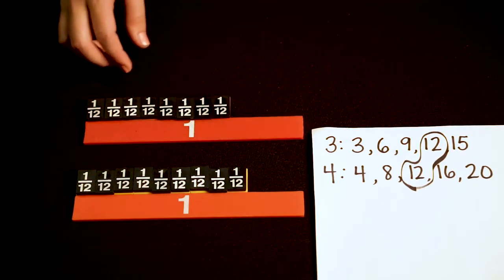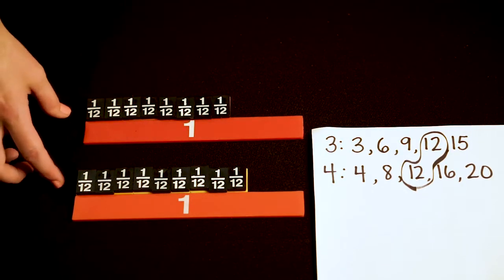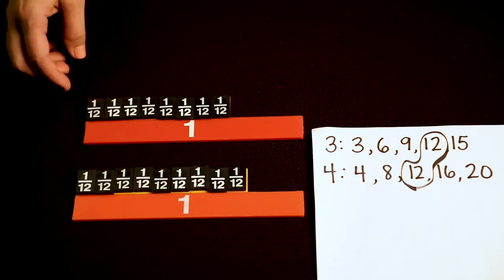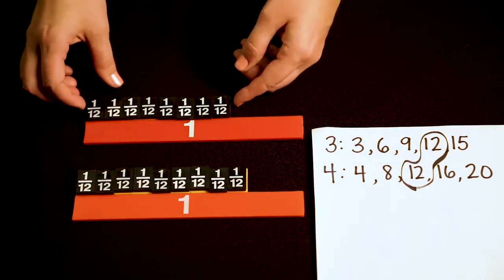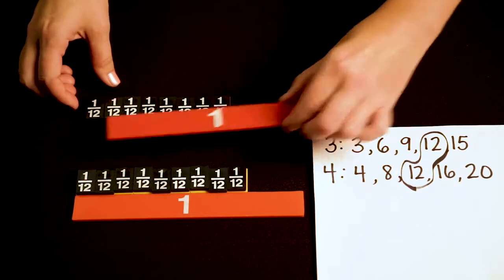Now that I have the same denominator or common denominators, I can add these fractions together. I'll start here. We'll start with my 8 twelfths, and to that I'm going to add my 9 twelfths.